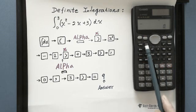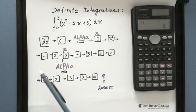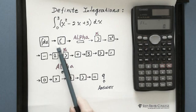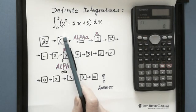First, this button. So this is the integration. Then enter the function. So we put the brackets.